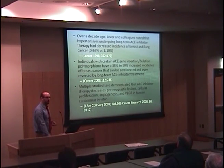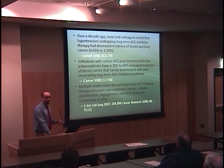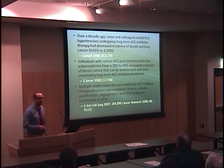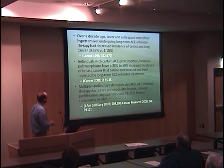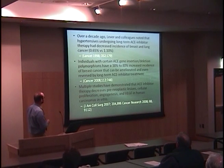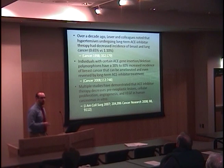This is an interesting case study as to how research works, which often starts with an intriguing observation, leading to an idea, which leads to testing first in vitro in petri dishes, then in animals, and then in humans. It started about ten years ago in 1998, when Lever and colleagues made the interesting epidemiological observation that hypertensive patients undergoing long-term treatment with ACE inhibitors had a decreased incidence of breast and lung cancers — 0.65% versus 1.1%. This tweaked a lot of ears and got people going in the lab as far as looking at why this would be the case.